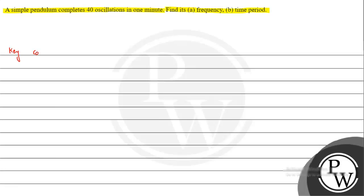As a key concept, we need to understand the simple pendulum. For a simple pendulum, we have a string tied to a heavier object which we call a bob — a mass m. If we slightly displace it from its mean position, it will start to oscillate about its mean position.